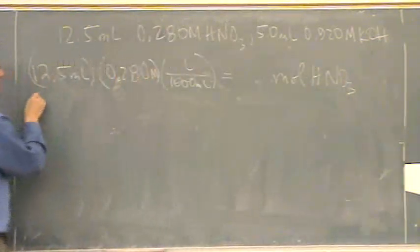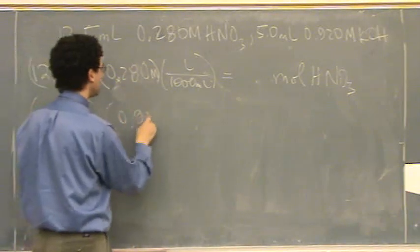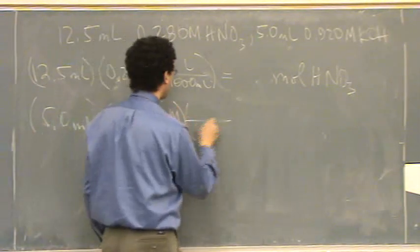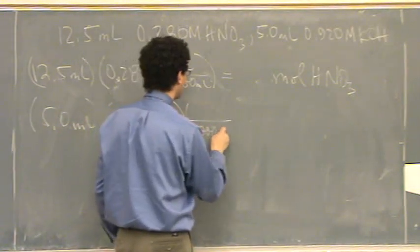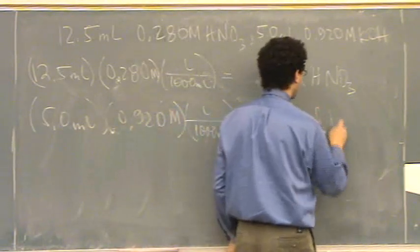And then you do the same for the other one. 5 milliliters times 0.920 molar times 1,000 milliliters per liter. So here, that's moles of KOH.